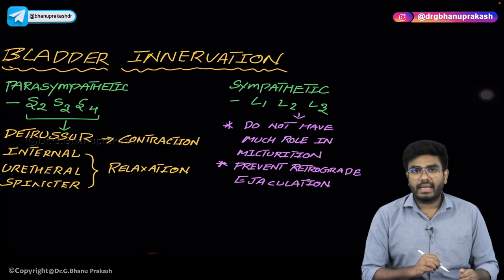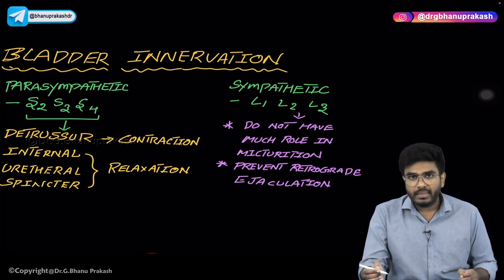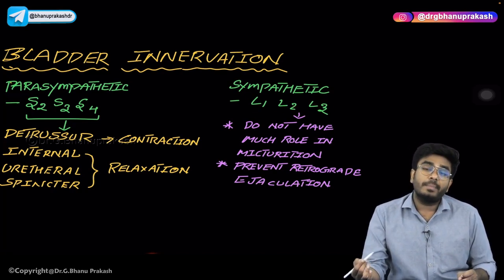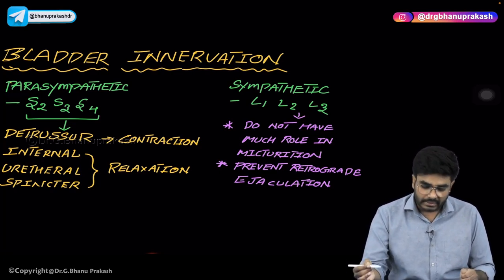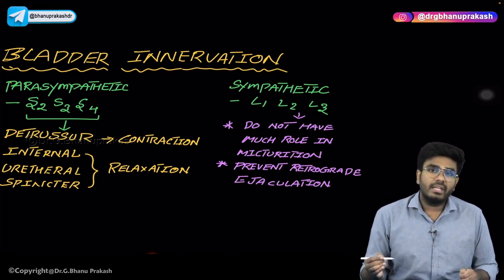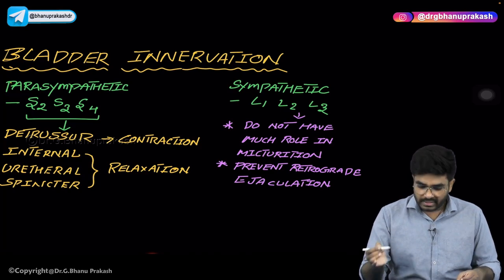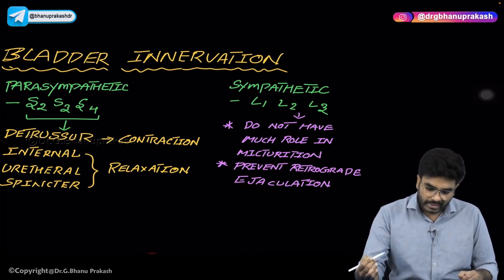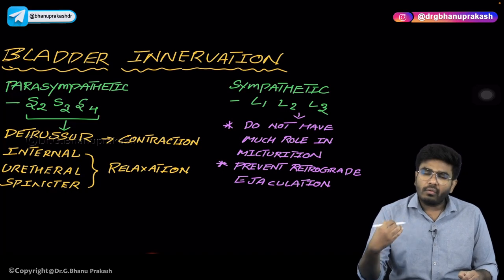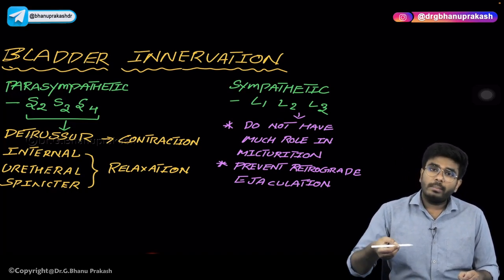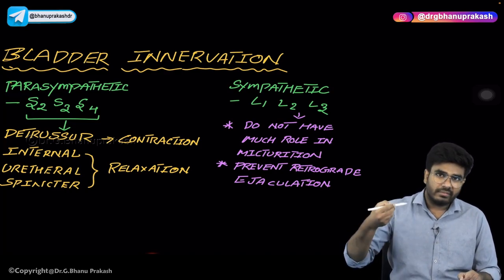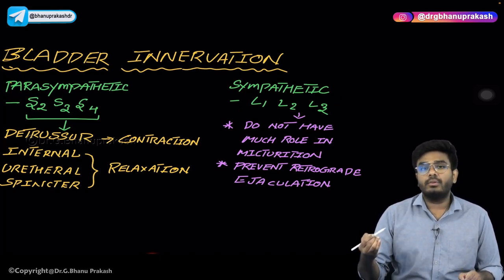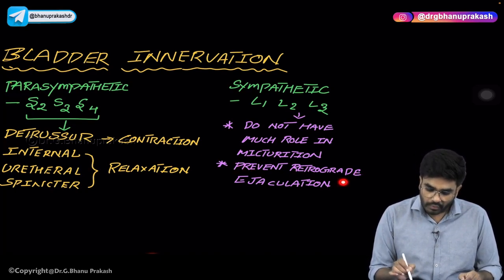The bladder also receives sympathetic innervation from L1, L2, and L3 spinal nerves. The sympathetic innervation does not have a major role in micturition. Instead, it mainly helps in prevention of retrograde ejaculation. During sexual activity, ejaculation should move forward in an antegrade direction and not go back to mix with urine in the bladder. The sympathetic activity from L1, L2, L3 prevents this retrograde ejaculation.